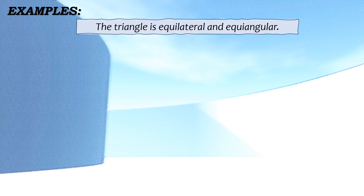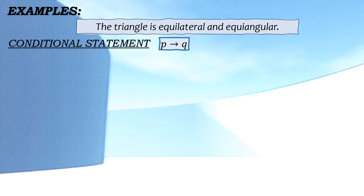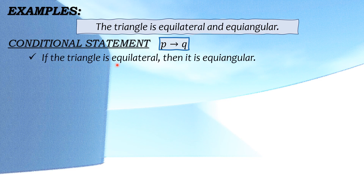Let's now have the example. We have the given statement: 'The triangle is equilateral and equiangular.' So gamitin natin ito sa conditional statement with the format if P, then Q. Hahatiin natin sa dalawa ang ating given statement. So ito ay magiging: if the triangle is equilateral, then it is equiangular. Ito yung ating hypothesis, and yung sentence na 'it is equiangular' ito naman yung ating conclusion.